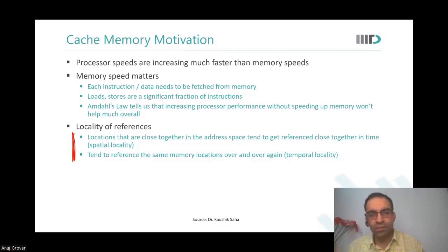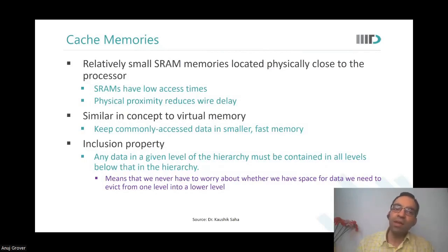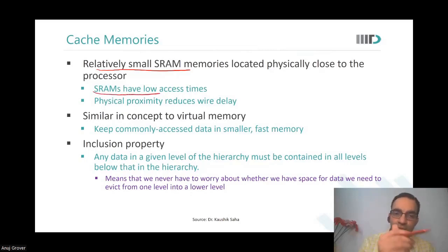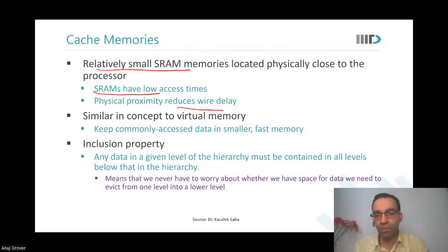Because we have this locality of references, we do not really need the entire big memory to be accessed every cycle. We use a relatively small SRAM placed physically close to the processor, so that not only does it have smaller access time, but the physical proximity also reduces wire delays. We are essentially trying to keep commonly accessed data in smaller, faster memory.